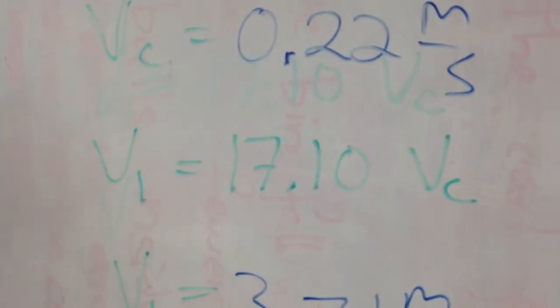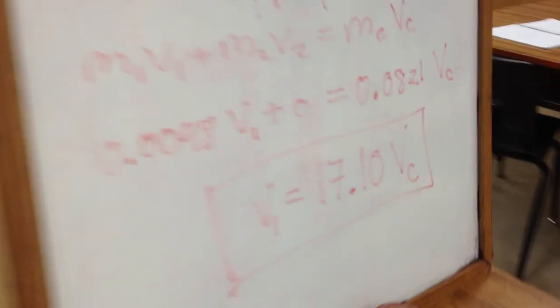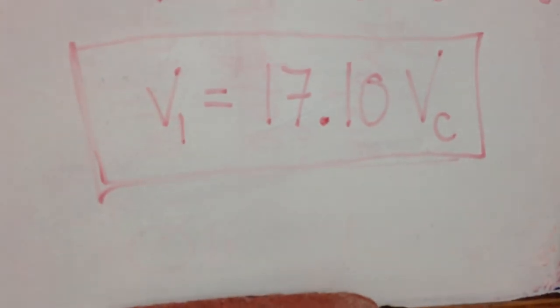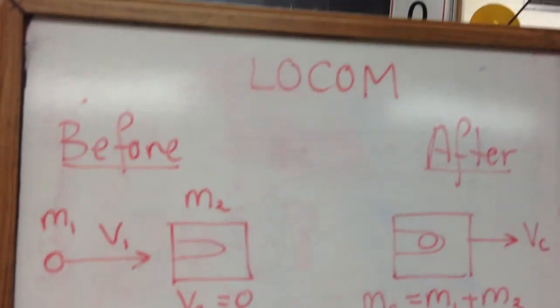Times 17.1, 3.71 meters per second. So, in total, we're left with these equations. Your height gives you the velocity of the combined objects, and the velocity of the combined objects gives you the velocity of the bullet.